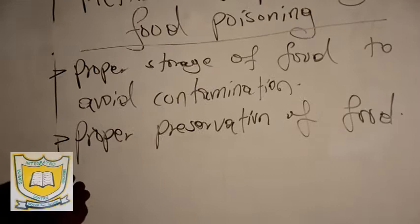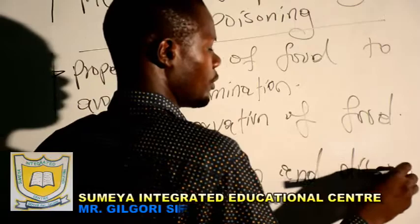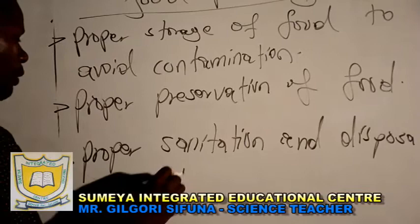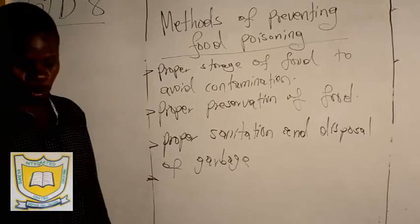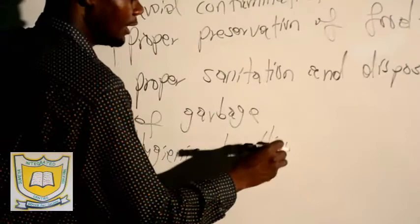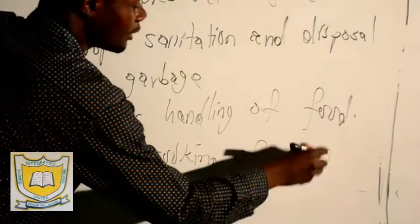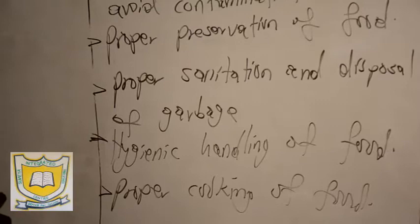Next, we have proper sanitation and disposal of garbage. Another way of preventing food poisoning is the hygienic handling of food. Then, proper cooking of food. You should cook food properly. We have thorough washing of hands before handling food.